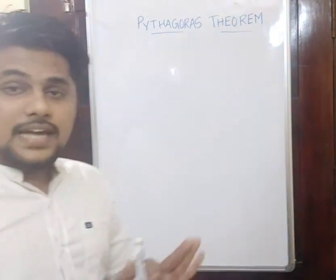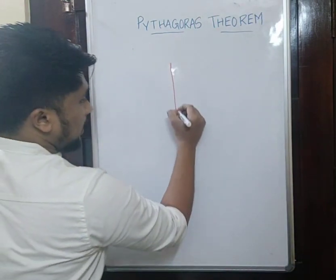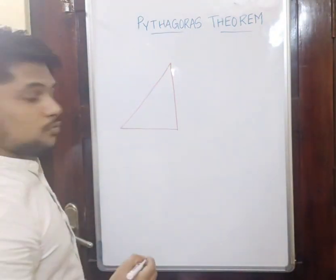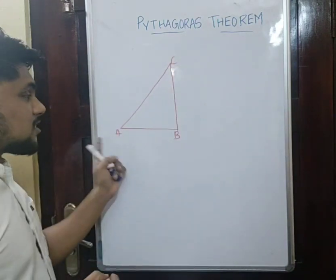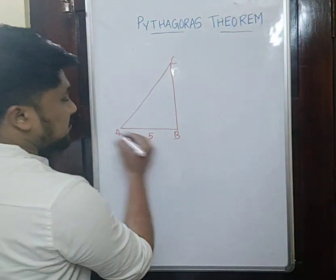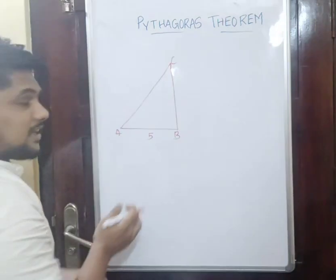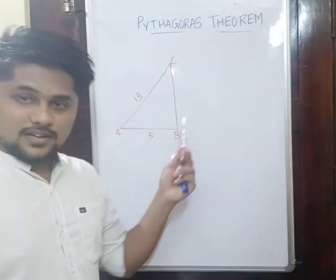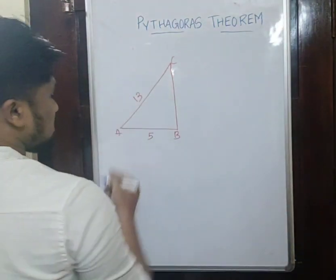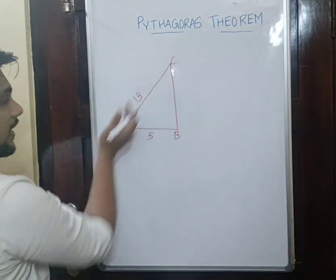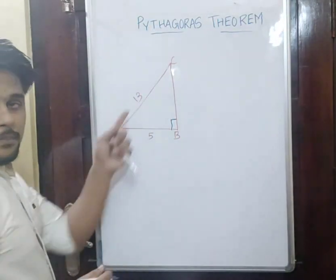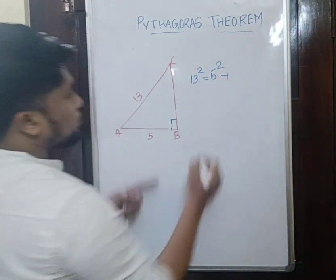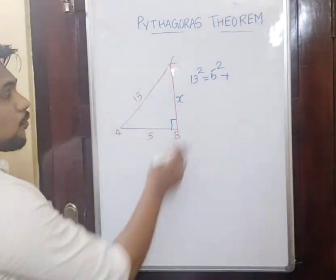Now let's discuss a real-life problem. There is a wall, and a ladder is standing against the wall. I am giving names A, B, and C. The distance between the base of the wall and the foot of the ladder is 5 cm, and the ladder is 13 cm long. We need to find the height of the wall. We can directly use the Pythagoras theorem. AC is the longest side — the hypotenuse is 13 — because we have a right angle here.